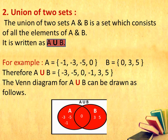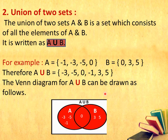The Venn diagram for A union B can be drawn as follows. Here you can see set A with elements -3, -5, -1, and set B with elements 3, 5, and the common element 0 mentioned in between. The only difference between union and intersection in the Venn diagram is: in intersection, only the common element region in between is shaded, but in union, the complete region of both circles is shaded.